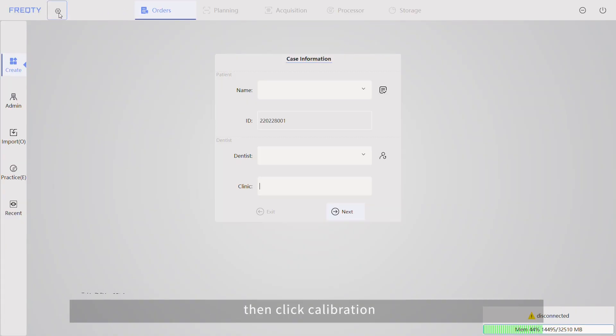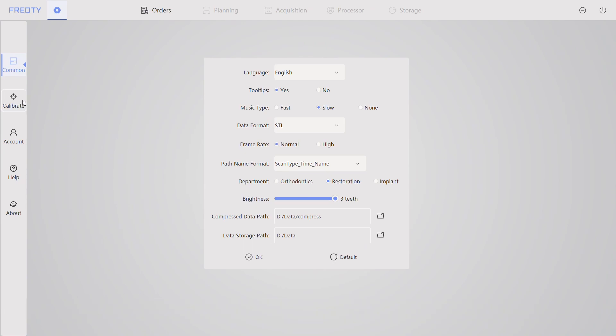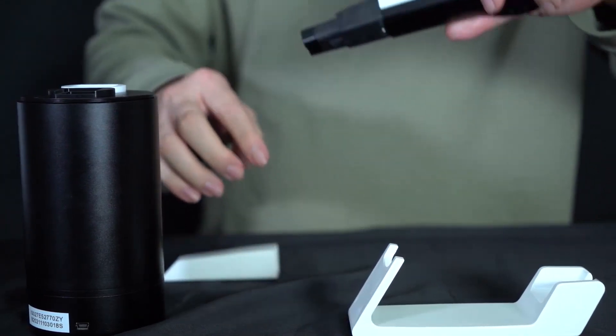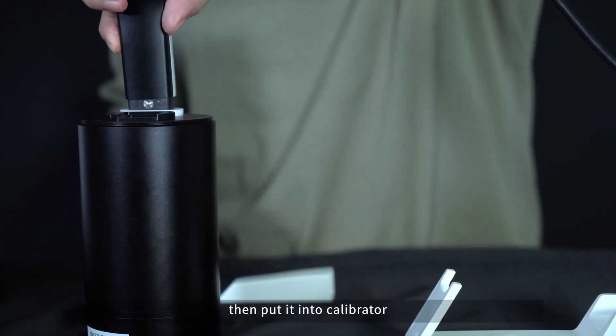Click setting, then click calibration. Pick up the scanner and take off the tape, then put it into Calibrator.